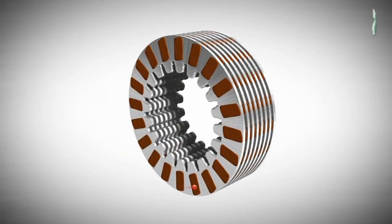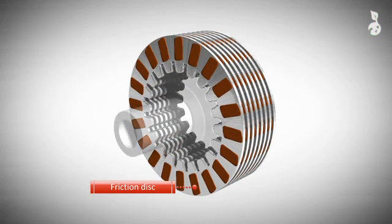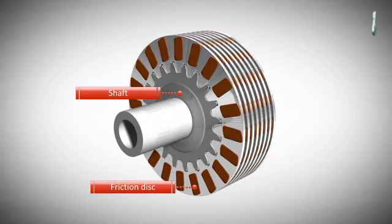A multi-plate clutch is composed of a series of friction disks that are connected to a shaft. The friction disks have friction surfaces to increase the coefficient of friction. Usually friction surfaces are made of carbon fiber, sintered bronze, or graphite.